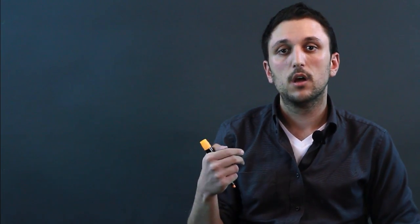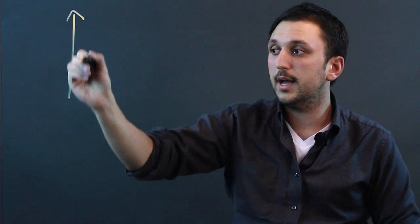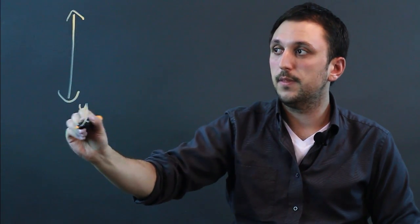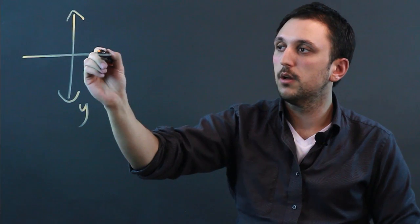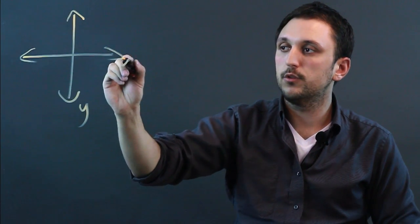So when you're making a two-dimensional graph, you have to think of two axes. The first you have to draw is the vertical, or the y-axis, and then the next is the x-axis, which is the horizontal.